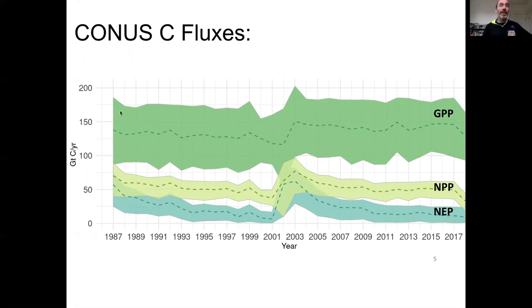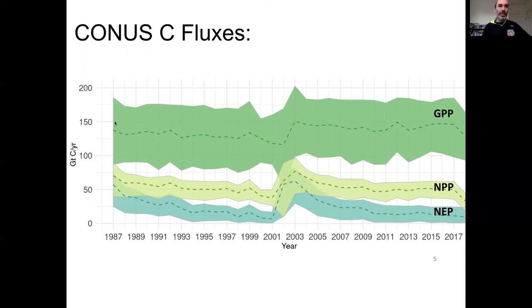Here's our estimated carbon budget for the U.S. from 1987 to present in terms of gross primary productivity, net primary productivity, and NEP — net ecosystem productivity. There are some patterns here that are likely transients of the data assimilation system itself. From the start of the system there are a few initial transients, and once we assimilate the LAI data, we see another transient as the data assimilation system comes into adjustment with information it's getting from the MODIS LAI.